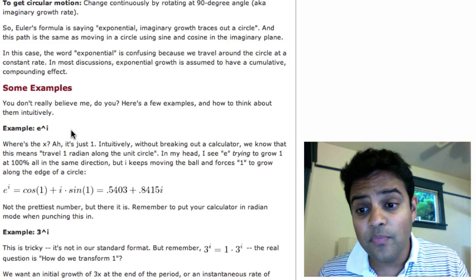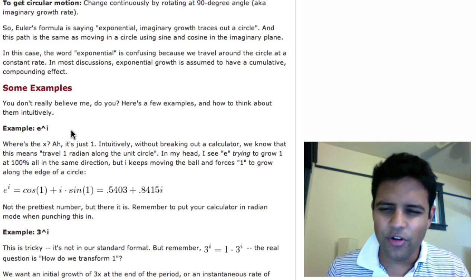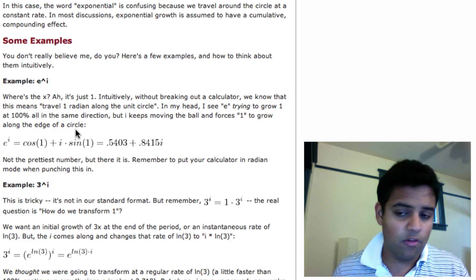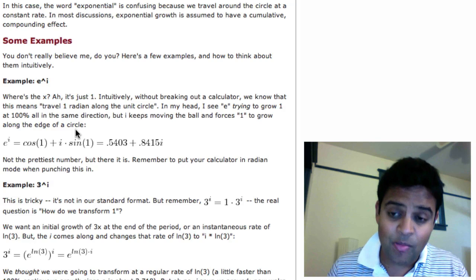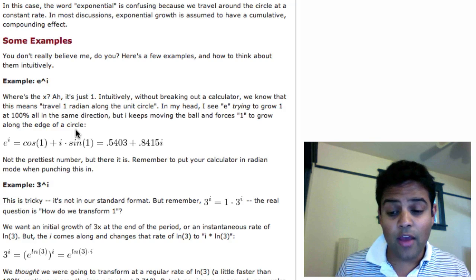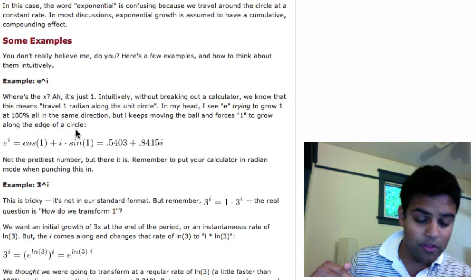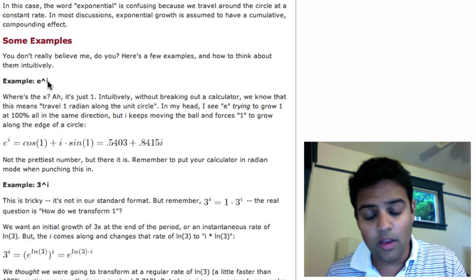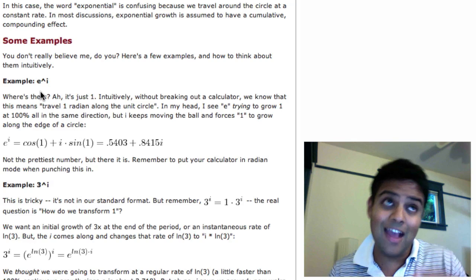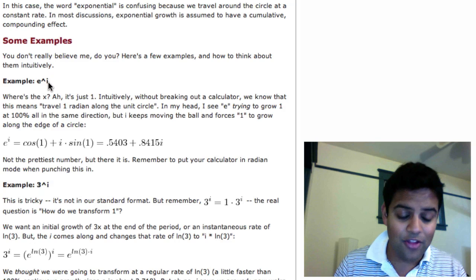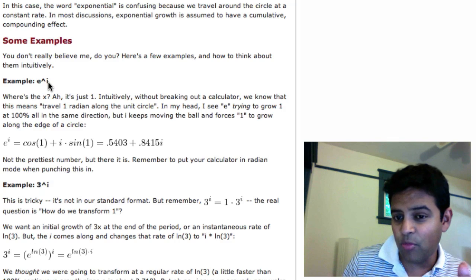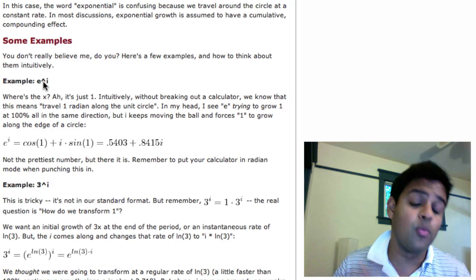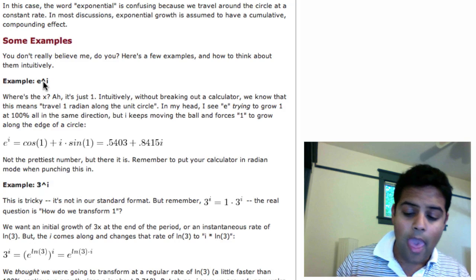So for example, e to the i, e to the i power, that's such a weird, weird exponent, but one thing we can do is say, okay, what does it mean? e is just our base, and we use it as a base of growth. I in the exponent means whatever interest rate you had, rotate it. So instead of growing the same direction that you wanted to, start growing up. And how long do we grow for? Well, there's actually an implicit 1 there. It's really e to the i times 1. So the i here is telling us to rotate instead of going straight, and then the times 1, which you don't see, but it's really there, e to the i times 1 power, that's telling us how long to go for. So we're really going for 1 unit of time.